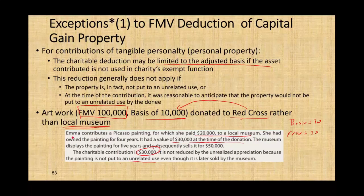Another example: Emma contributes a Picasso painting for which she paid $20,000 to a local museum. She had owned it four years, and it had a value of $30,000 at the time of donation. The museum displayed the painting for five years and subsequently sold it for $50,000. The charitable contribution is $30,000 — the fair market value — because the painting was not put to an unrelated use. Emma can deduct $30,000. If Emma had given the painting to the Red Cross, she could only deduct the basis of $20,000.